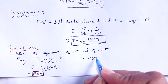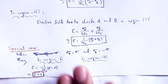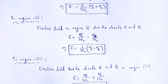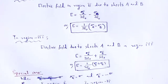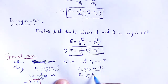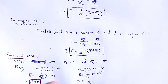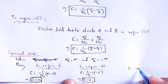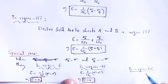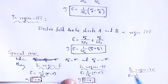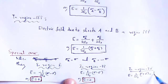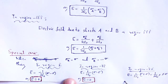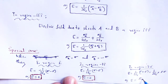In region two, E equals one over two epsilon-not times (sigma A minus sigma B) equals one over two epsilon-not times (sigma minus negative sigma) equals one over two epsilon-not times two sigma. The twos cancel, so E equals zero as well. Finally in region three, E equals one over two epsilon-not times (sigma A plus sigma B) equals one over two epsilon-not times two sigma. The twos cancel, giving E equals sigma divided by epsilon-not.